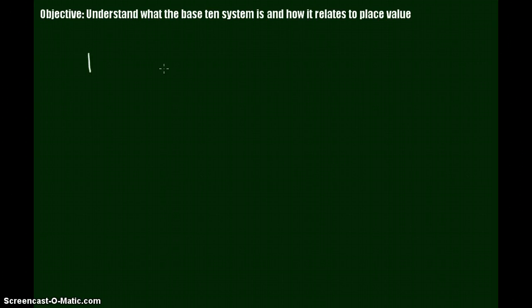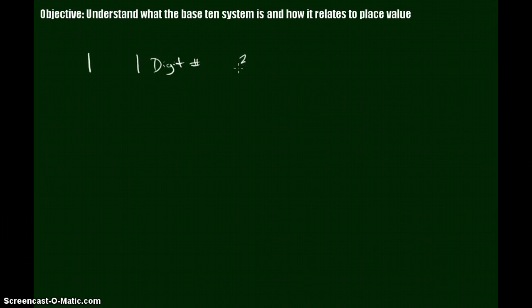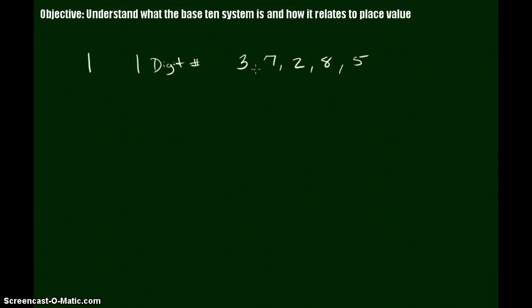To get started, let's look at the number one. We're going to call that a one-digit number because the number one only has one number in it. There are more one-digit numbers — for example, three, seven, two, eight, and five are all one-digit numbers because there's only one digit in each. The smallest one-digit number is one, and the largest one-digit number is nine.